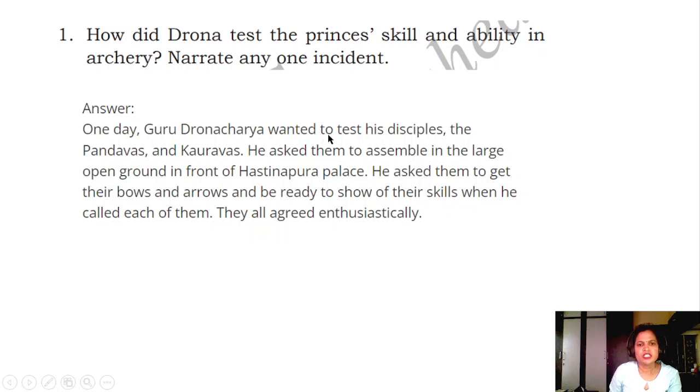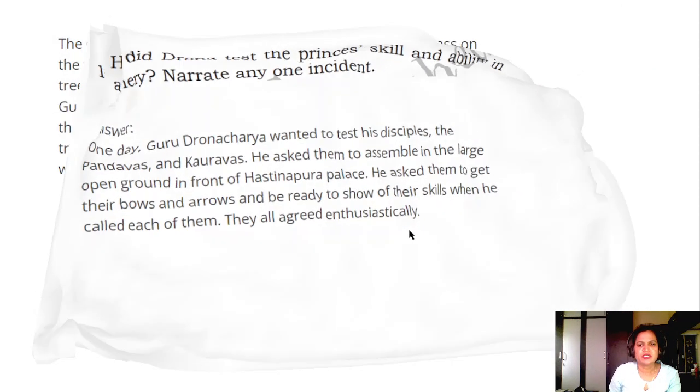Answer: One day, Guru Dronacharya wanted to test his disciples, the Pandavas and Kauravas. He asked them to assemble in the large open ground in front of Hastinapura palace. He asked them to get their bows and arrows and be ready to show off their skills when he called each of them. They all agreed enthusiastically.